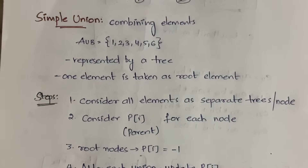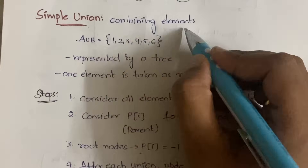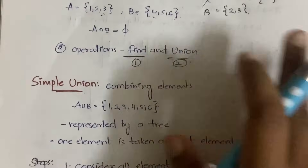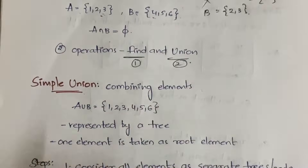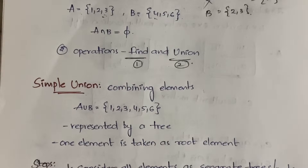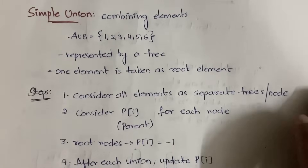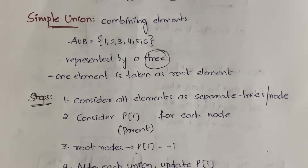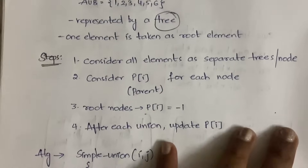In this video we will learn how to do simple union and simple find algorithms. Union means combining elements. For example, here we have two sets A and B — two disjoint sets. Combining both of them gives you one, two, three, four, five, six. We are representing this union operation with the help of a tree, and you can pick any one element as the root node arbitrarily.